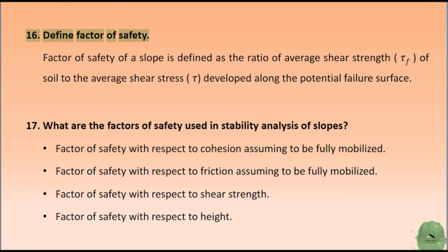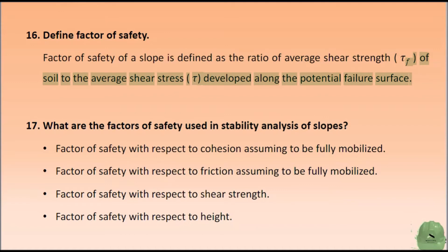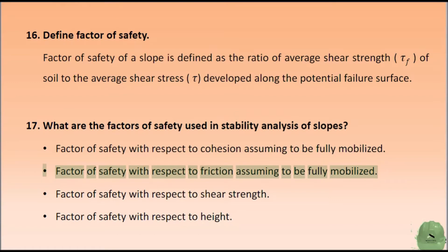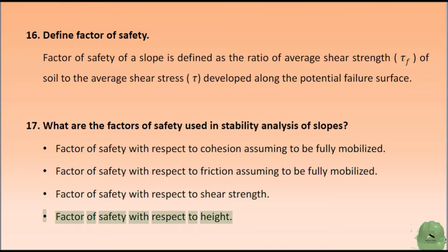Define factor of safety. Factor of safety of a slope is defined as the ratio of average shear strength of soil to the average shear stress developed along the potential failure surface. What are the factors of safety used in stability analysis of slopes? Factor of safety with respect to cohesion, factor of safety with respect to friction, factor of safety with respect to shear strength, and factor of safety with respect to height.